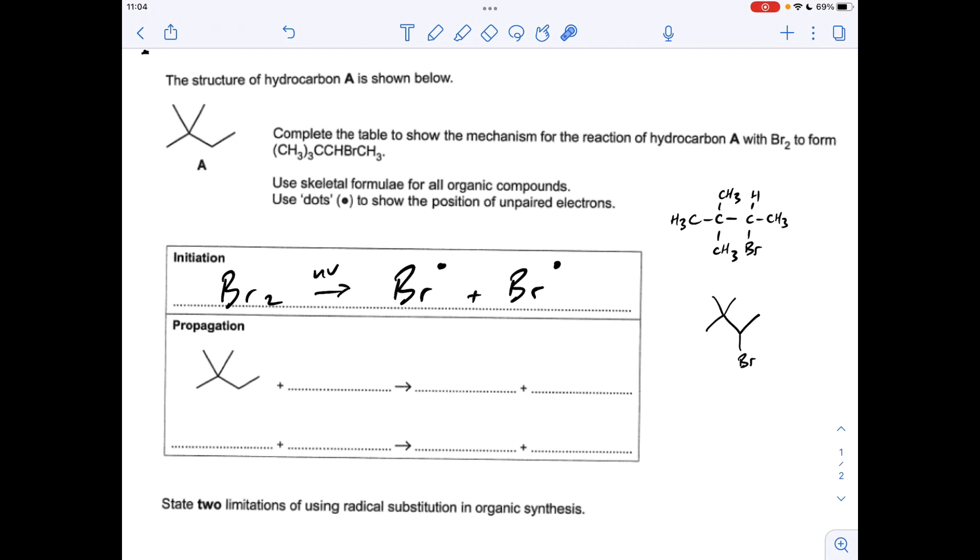So for the first propagation step, we're going to take one of those bromine radicals, and it wants an electron basically. So what it's going to do is take a hydrogen—remember the substitution's happening here—so it's going to take a hydrogen from here and its electron. That's going to form an HBr molecule and what's left of this will be a radical. Now notice we've got to use the dots and show the position of the unpaired electron. So basically we need a dot on this carbon here.